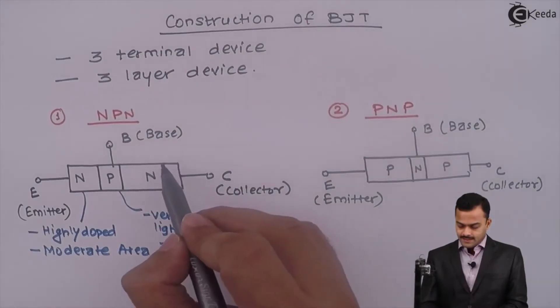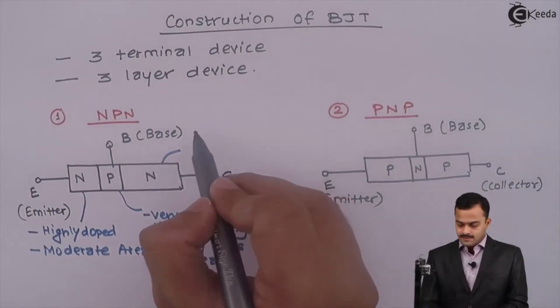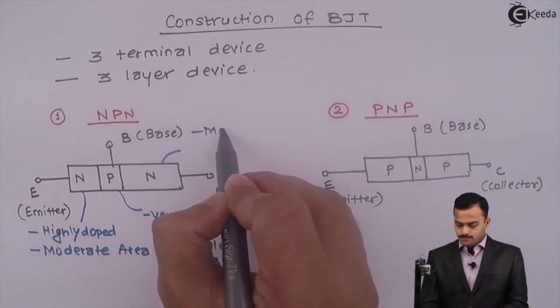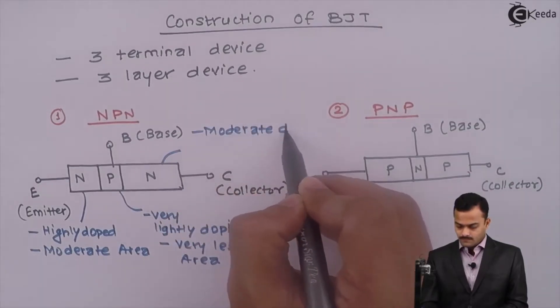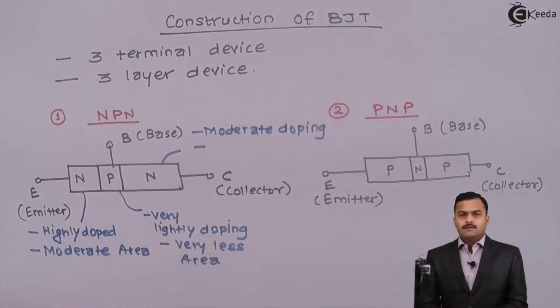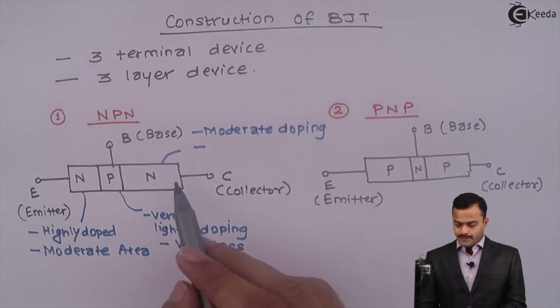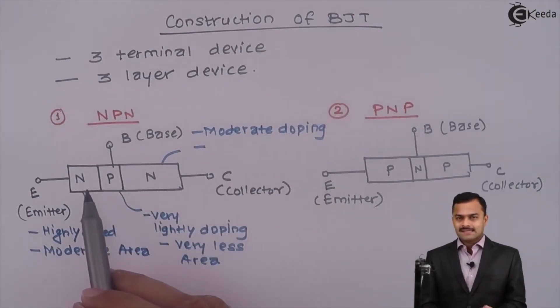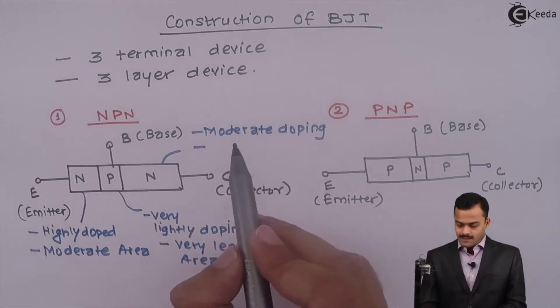Whereas Collector is moderately doped. Doping is more than Base but little less than Emitter. And the area is largest.